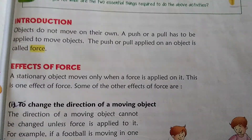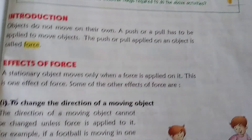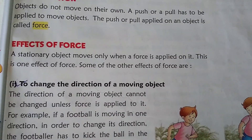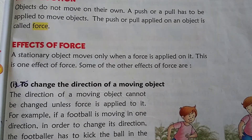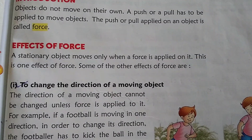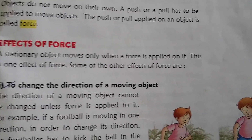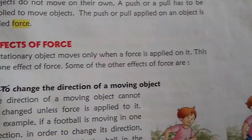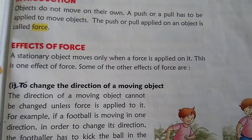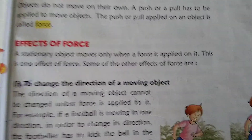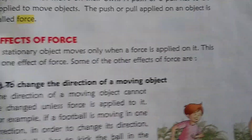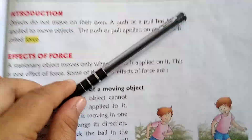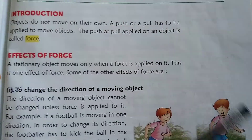Now the effect of force. A stationary object moves only when force is applied on it. A stationary object means it is not moving. For example, this is a box — it is not moving. This is a stationary object.